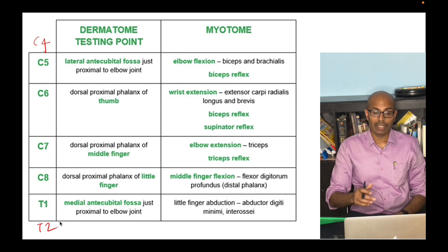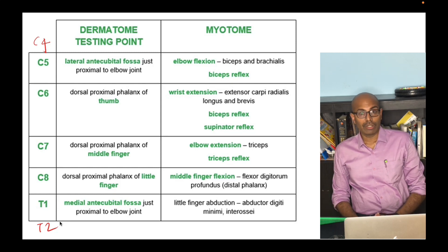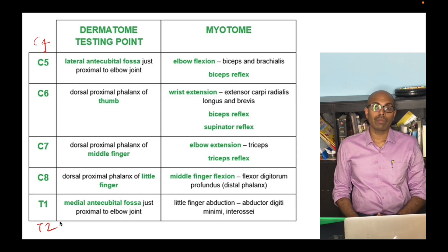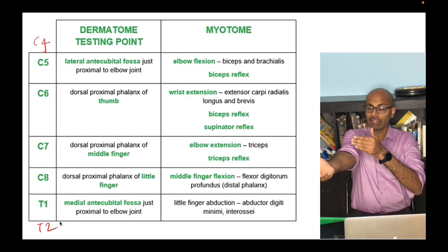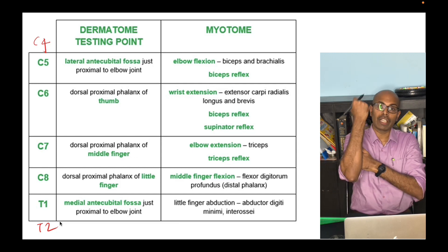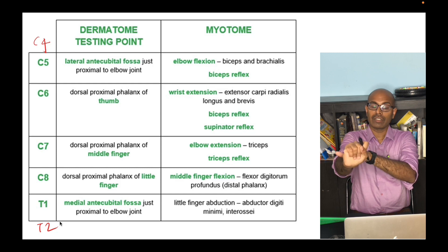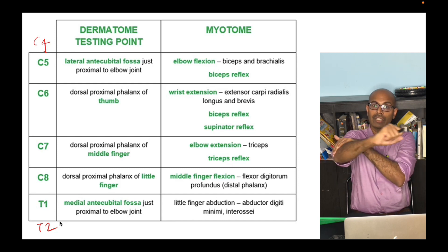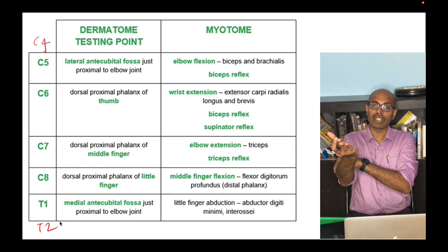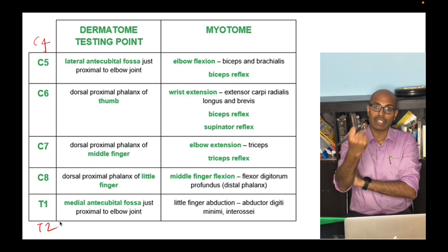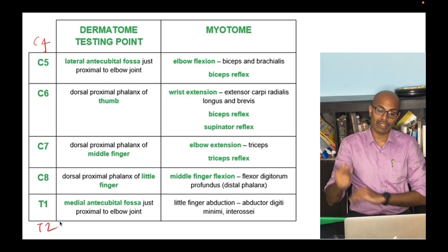The myotomal distribution is a little more confusing but still easy to remember. C5 is elbow flexion, C6 is wrist extension, then going back proximally, C7 is elbow extension, C8 is finger flexion, and T1 is little finger abduction.